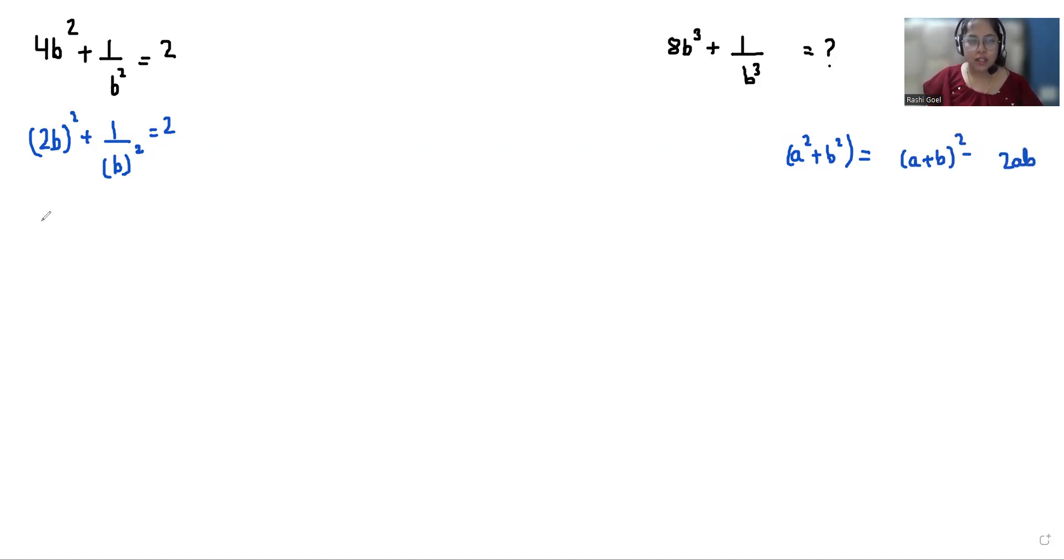So we can write 2b whole square plus 1 over b square equals 2b plus 1 over b whole square minus 2 times of a and b. We can eliminate this and write 2b plus 1 over b whole square minus 2.